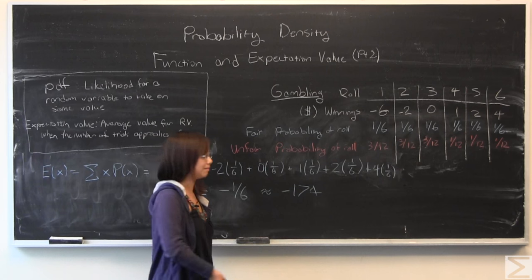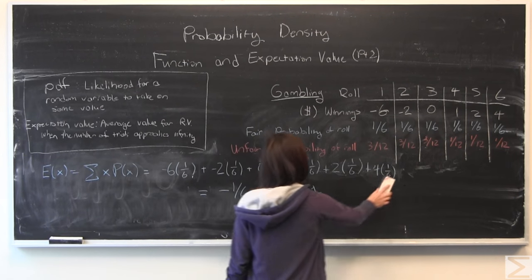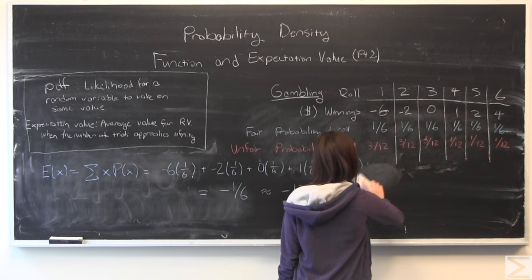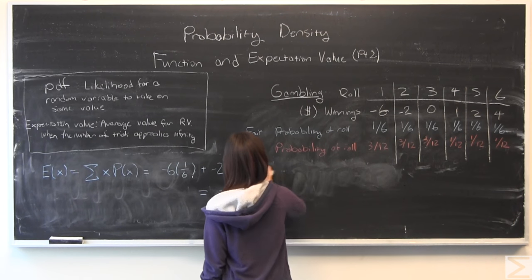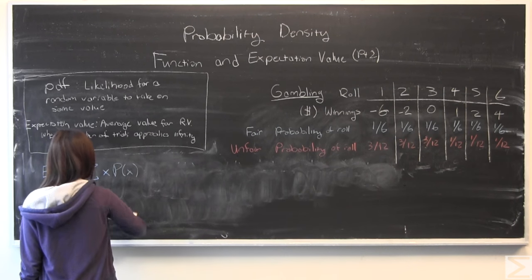Now I'm going to calculate it for the unfair die. That makes a slightly more interesting problem, but based on this first result, you're probably not going to make any money.